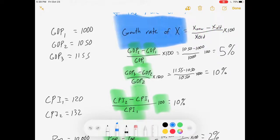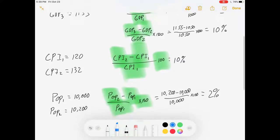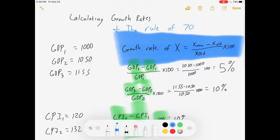So look at this equation long and hard. The growth rate of X, whatever the X, GDP, CPI, population, anything you want, the growth rate of X is new minus old over old times 100.